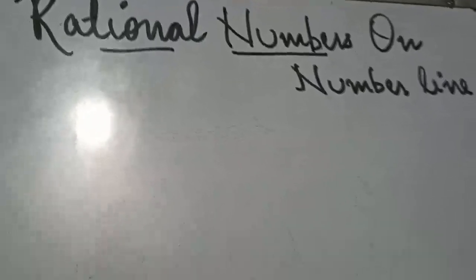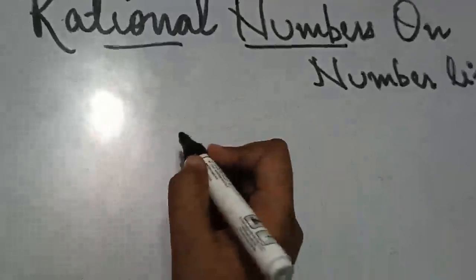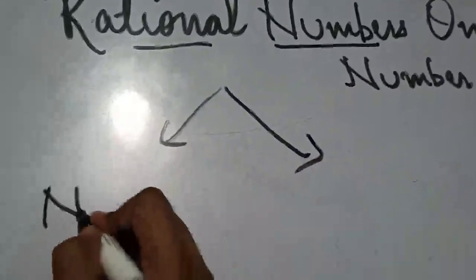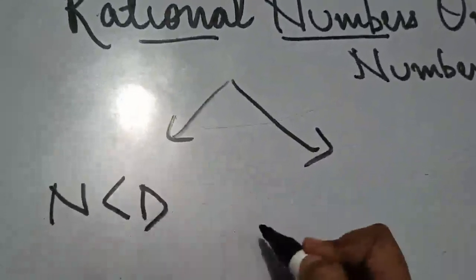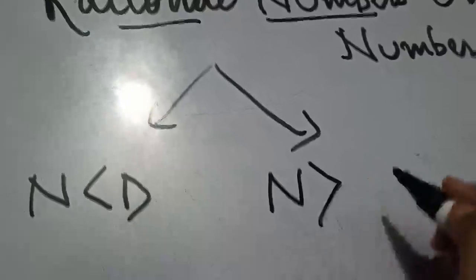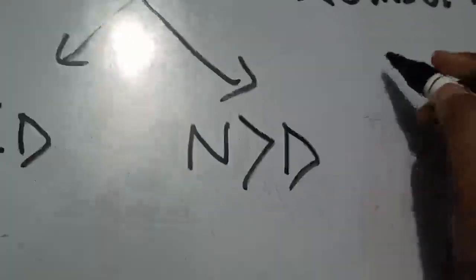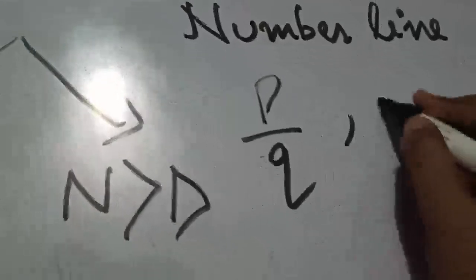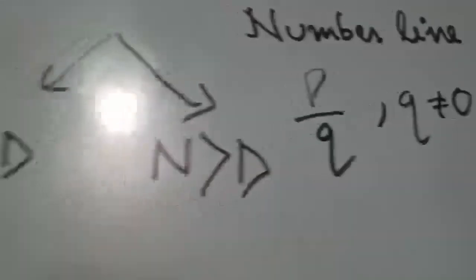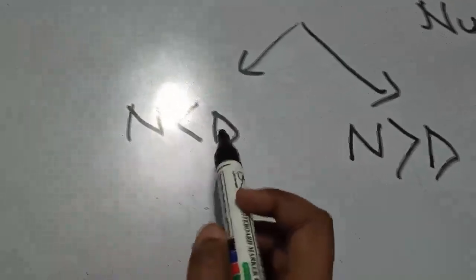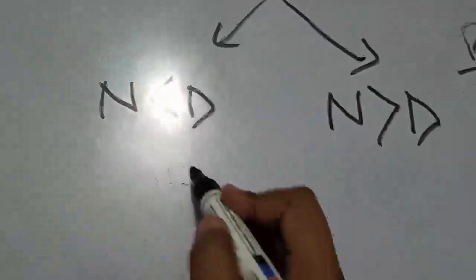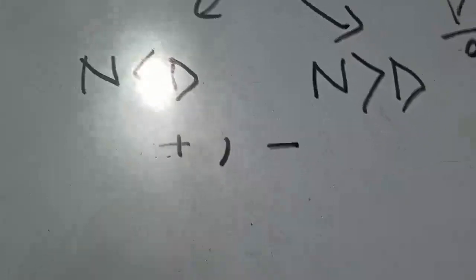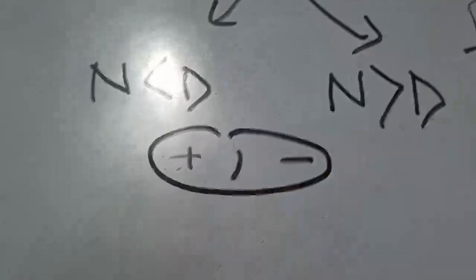Let's continue — rational numbers on the number line. Now we will see how many values we have to look at. We will look at the numerator and denominator. Rational numbers are in the form p upon q, where q is not equal to zero. Values can be such that the numerator is greater than the denominator, or smaller.